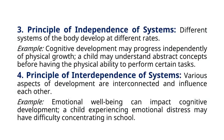The principle of independence of systems states that different systems of the body develop at different rates. For example, cognitive development may progress independently of physical growth — a child may understand abstract concepts before having the physical ability to perform certain tasks. The principle of interdependence of systems holds that various aspects of development are interconnected and influence each other. For example, emotional well-being can impact cognitive development; a child experiencing emotional distress may have difficulty concentrating in school.